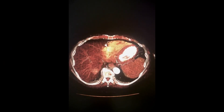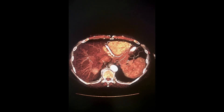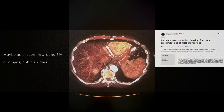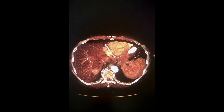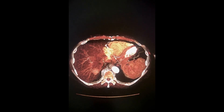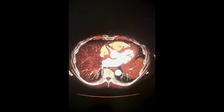Coronary arterial ectasia can often be present and is reported in approximately five percent of angiographic studies. In most patients this is due to atherosclerosis, while in some instances it can be associated with certain congenital conditions.